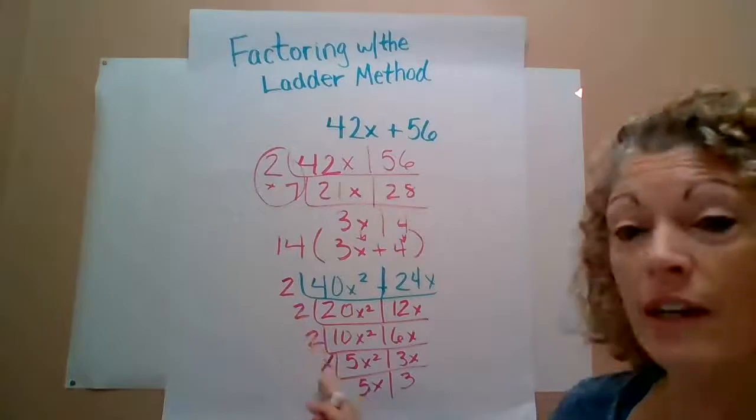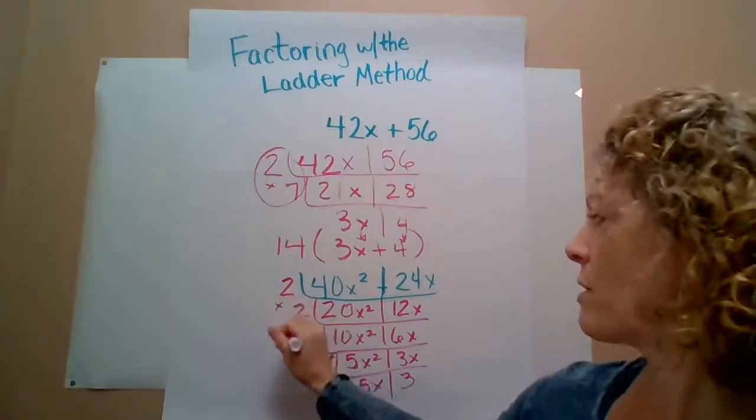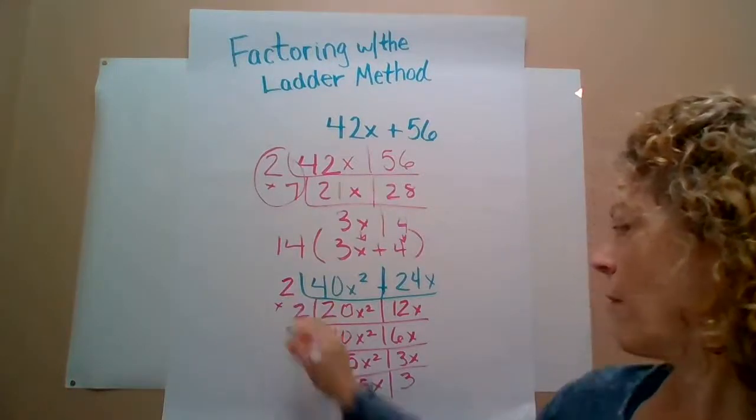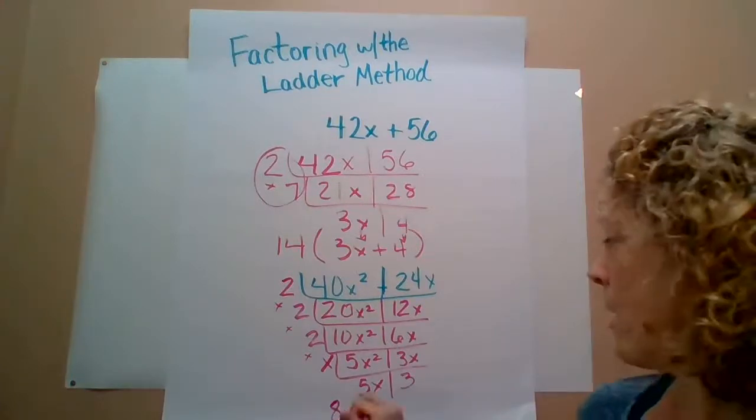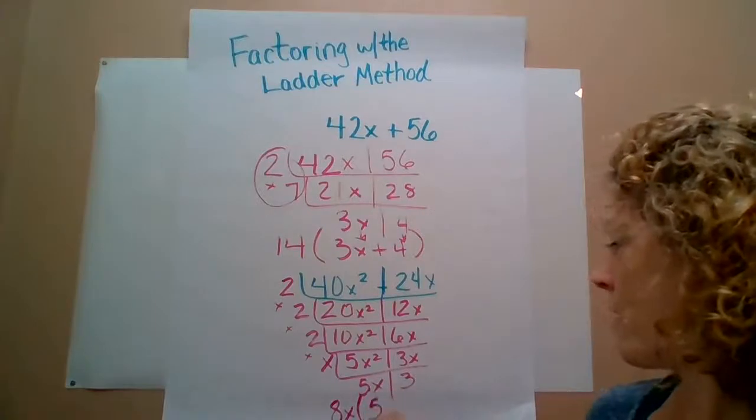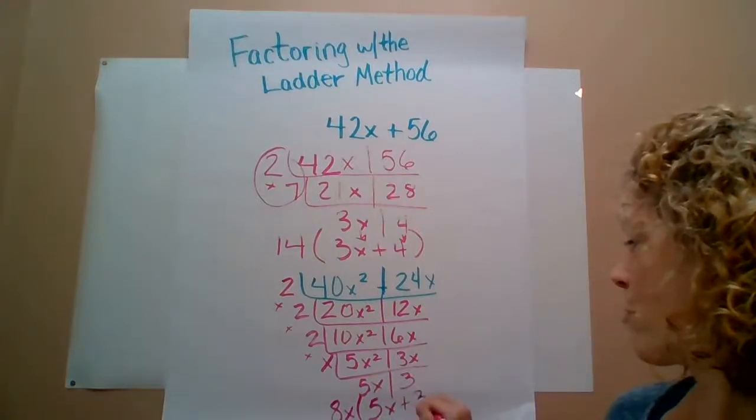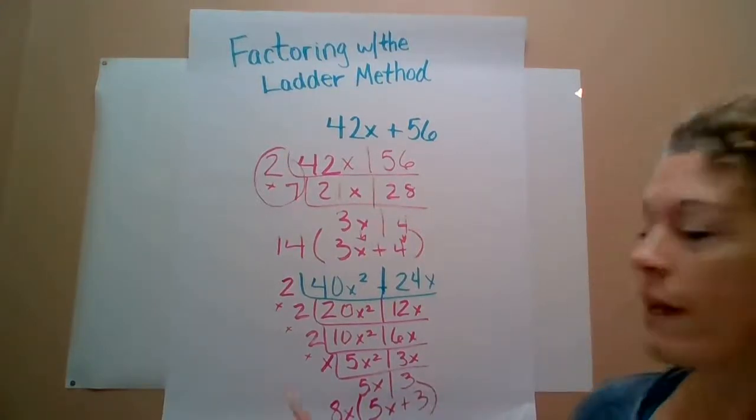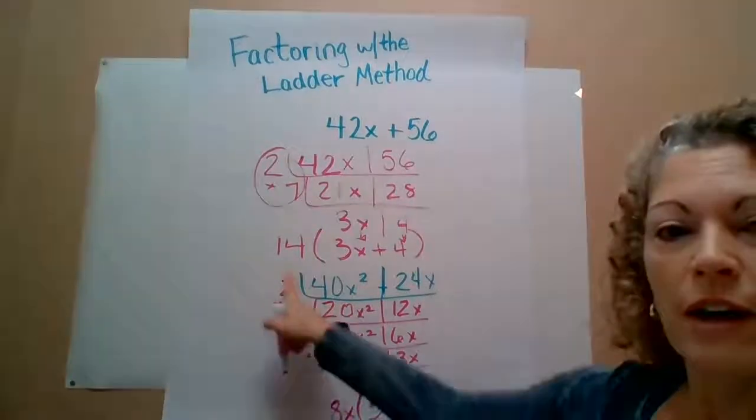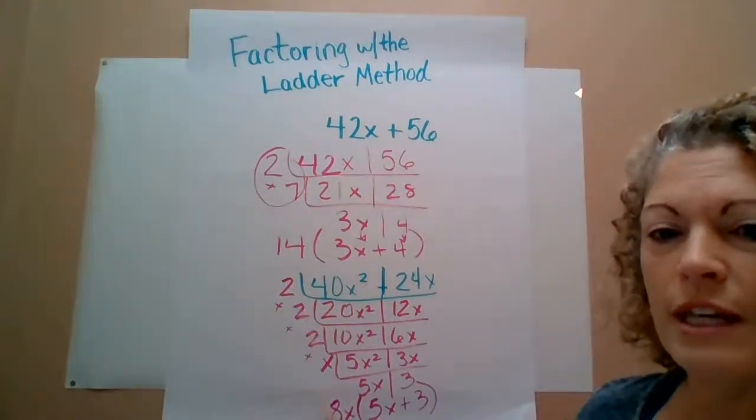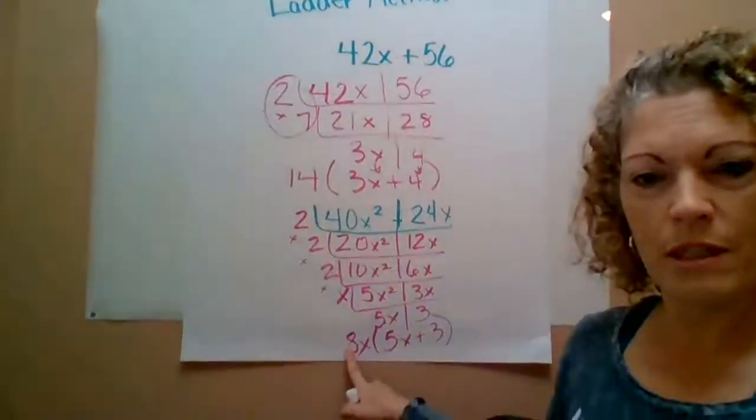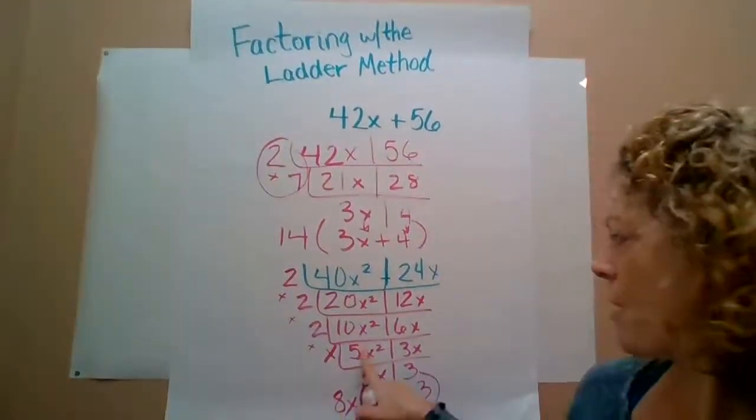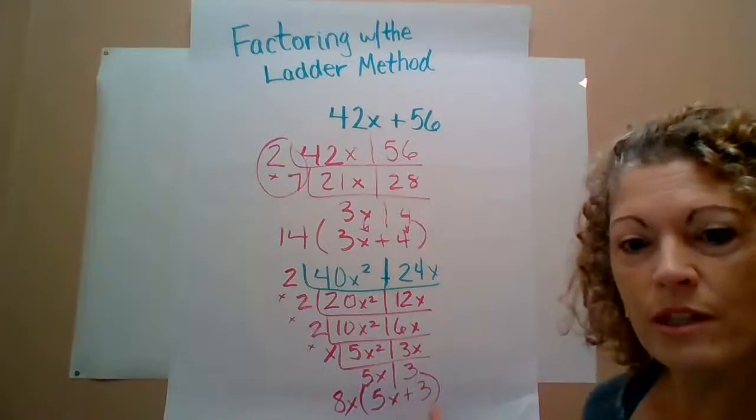And so they take all of these factors that are along the side, multiply those together, and we have 8x. And then these go in the parentheses: 5x plus 3. So again, it helps them remember that the factors along the outside are their GCF that goes out here on the side. And then the factors that are left at the bottom are the ones that go into the parentheses.